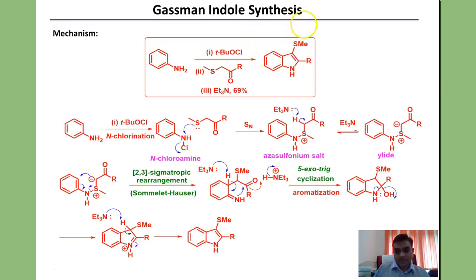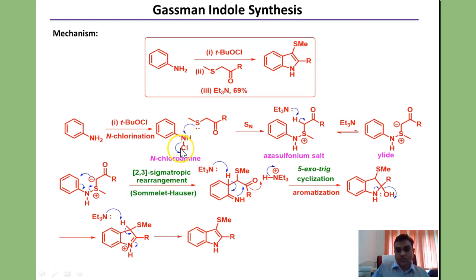The mechanism of this reaction is very interesting. First, tert-butyl hypochlorite — a source of Cl⁺ — performs N-chlorination, carried out at very low temperature. After forming the N-chloroamine, it reacts with the sulfur nucleophile, displacing chlorine to give a sulfonium salt. This sulfonium salt is somewhat acidic in nature, so its reaction with triethylamine generates a carbanion stabilized by the positively charged sulfur — this is called a sulfur ylide.